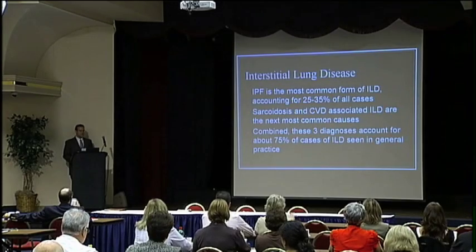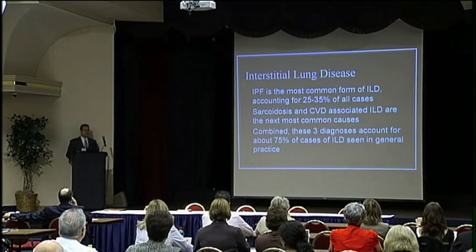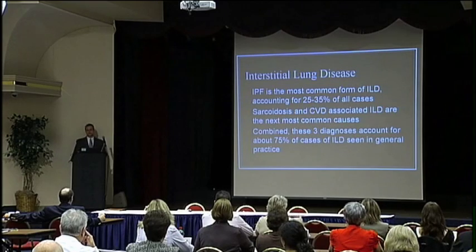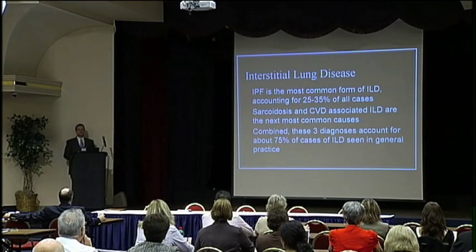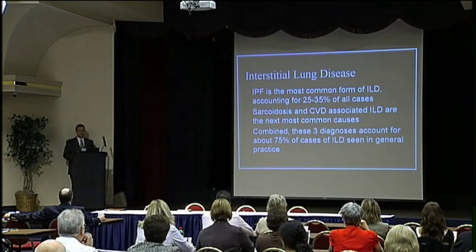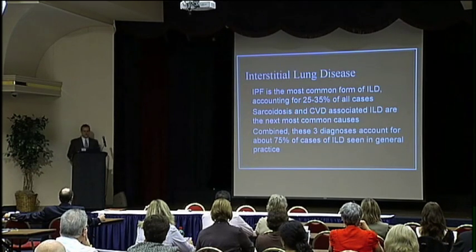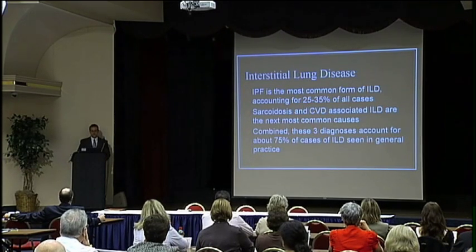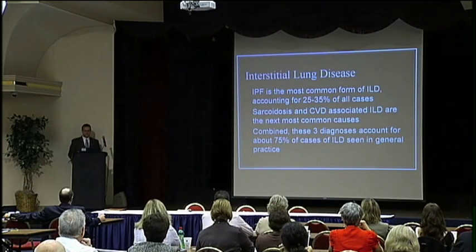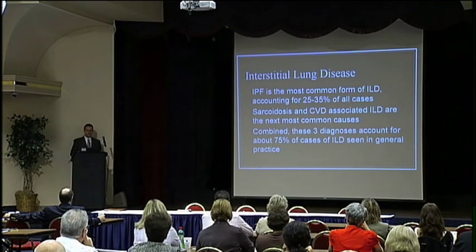Let's talk about diseases we see commonly. IPF is the most commonly seen form of interstitial lung disease, accounting for about 25 to 35 percent of all cases. Sarcoidosis and collagen vascular diseases are the next most common causes, and combined, these three diagnoses make up about 75 percent of cases seen in clinical practice.